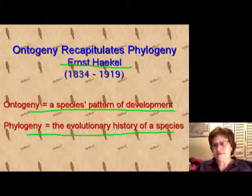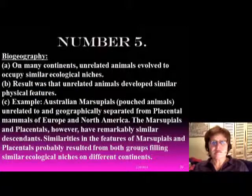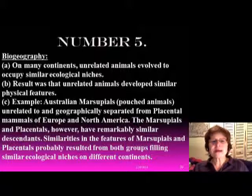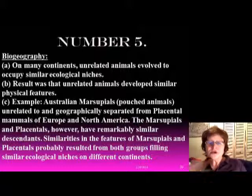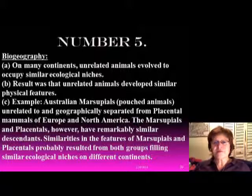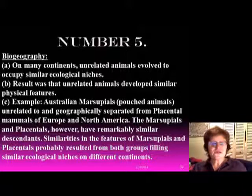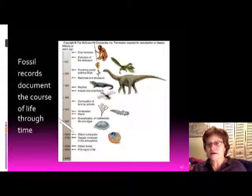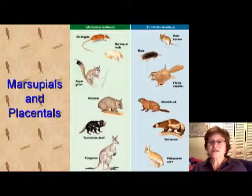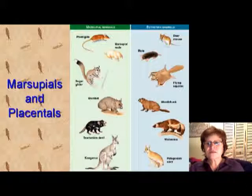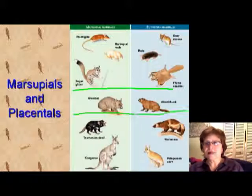Number five is biogeography. Biogeography is about the fact that on many continents, unrelated animals evolved to occupy very similar ecological niches. That means in different continents you've got different types of animals which developed very similar physical features. For example, the marsupials in Australia versus the placental mammals in Europe and Africa. Here is a picture — on the left side you can see the marsupials and on the right side the placental mammals, and you can see they are really, really similar with very similar features.